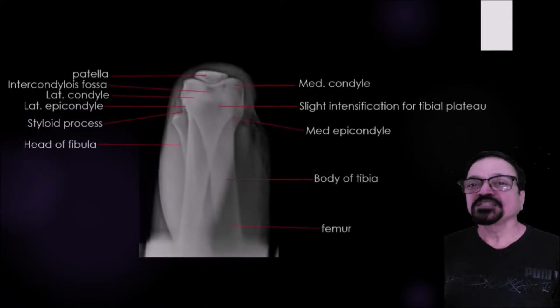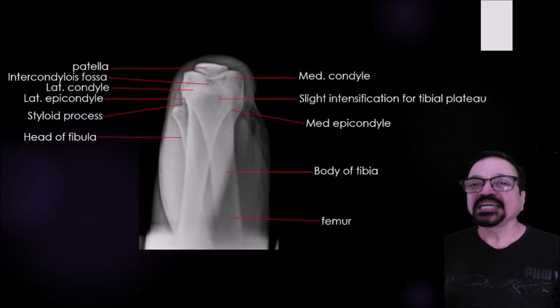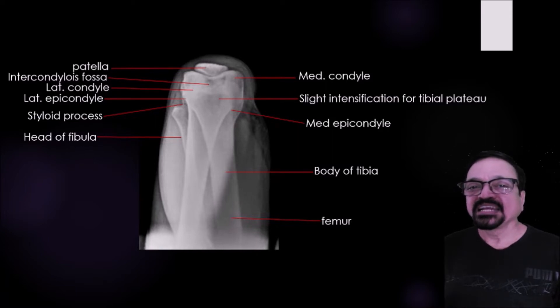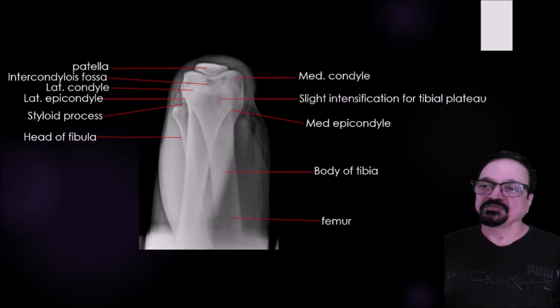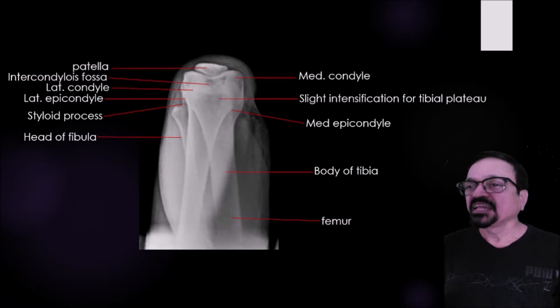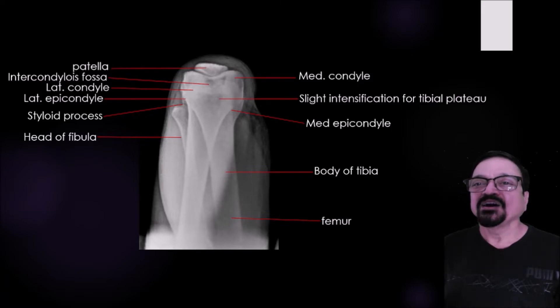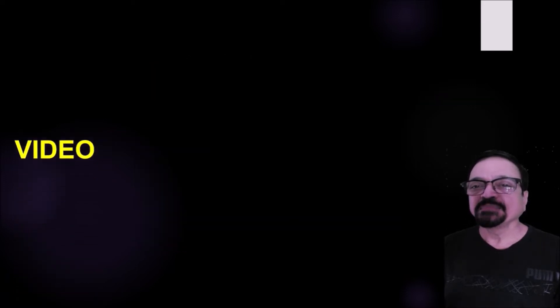On the skyline view we can see the patella, intercondylar fossa, lateral condyle, lateral epicondyle, styloid process, head of the fibula, femur, body of tibia, medial epicondyle, and medial condyle. However, the most important structure to evaluate is the patella articular surface. That is the main indication for this view.